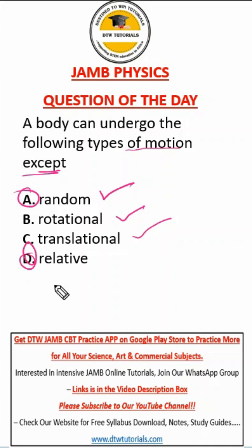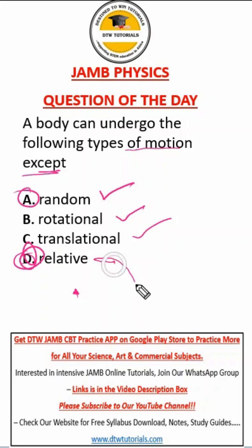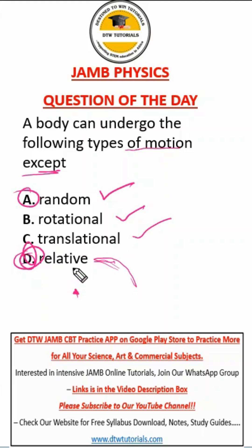A body cannot undergo relative motion, so our answer is D. When you talk about relative motion, it involves two bodies — one body is fixed and the other is moving. It describes motion in relation to a frame of reference. That's why relative motion is the exception.